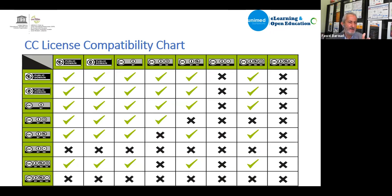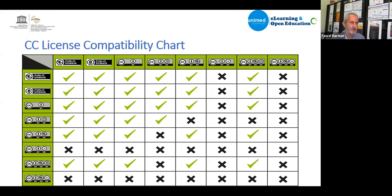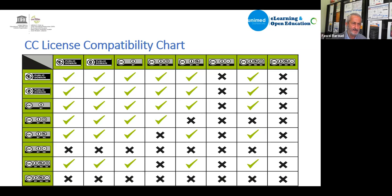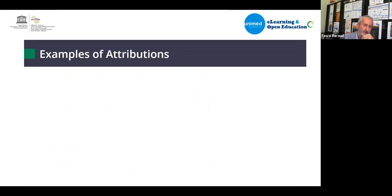For example, if you find a resource with CC BY and another resource with a different license, can you mix them together? If you find two pictures you want to combine into a new picture, are you allowed? This is what we call remixing — combining two licenses from different sources — and this is what the compatibility chart addresses.